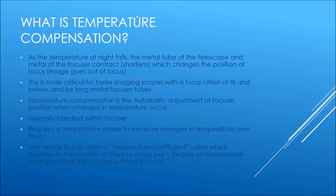Temperature compensation is about compensating for changes in the critical focus zone as the image shifts focus when temperature drops at night. The metal tube of the telescope contracts or shortens as temperature falls, changing the focus position. This is more critical for faster imaging setups and long metal focuser tubes, and there is also contraction of the actual focuser draw tube as well.